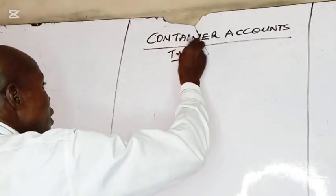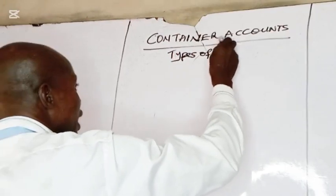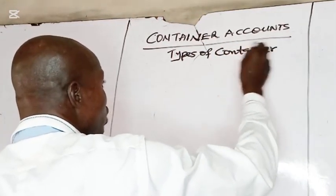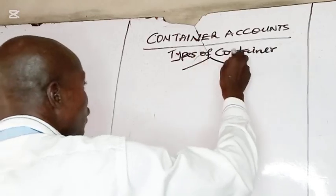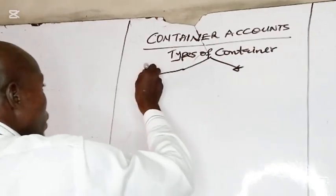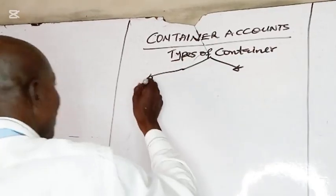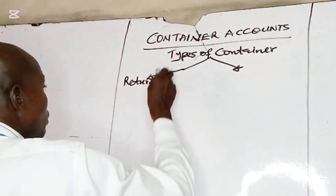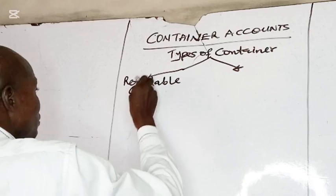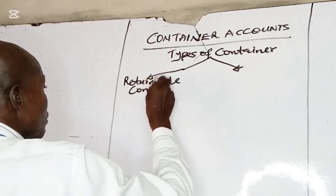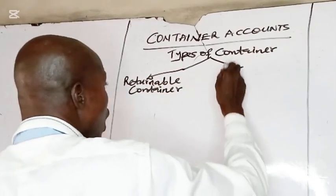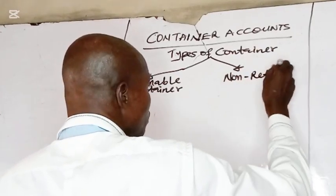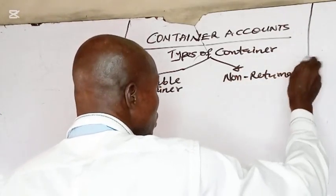So what are the types of container? Based on my illustration, we have two types of container. We have returnable container and non-returnable container.